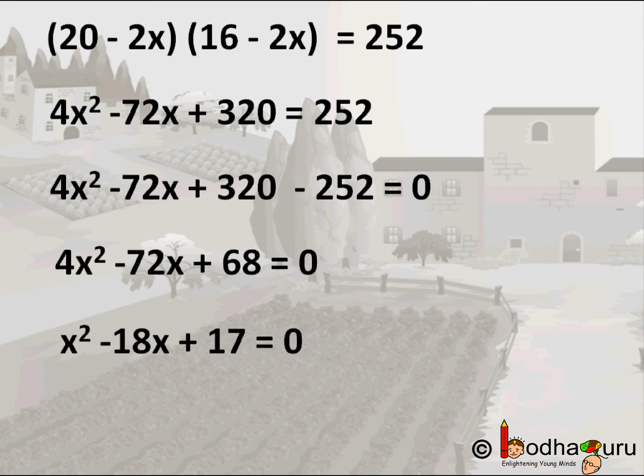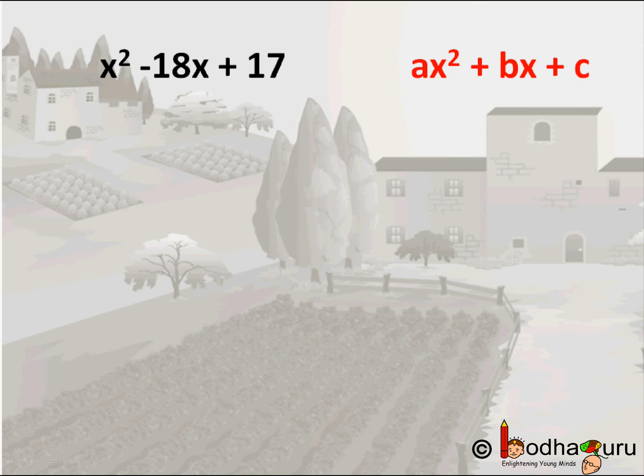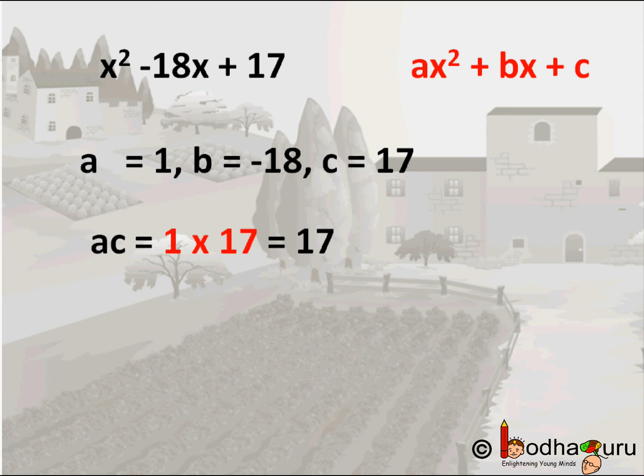How to solve it further? We need to finally find x, the width of the wall, so we need to simplify it further. Let us take the left side x² - 18x + 17 and try to find the factors of this polynomial first. We can express this polynomial as ax² + bx + c. So a = 1, b = -18, and c = 17. To solve it we need to find the product of the extremes, which is ac = 1 × 17 = 17.